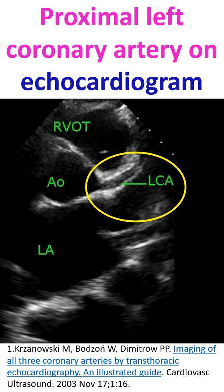A detailed guide on how to image all coronary arteries by echocardiography has been published by Marek, Krasnowski and colleagues. The article contains numerous echocardiographic images with color Doppler and Doppler in various views. In addition, multiple correlative coronary angiograms are also provided, and anatomical pictures have also been given.